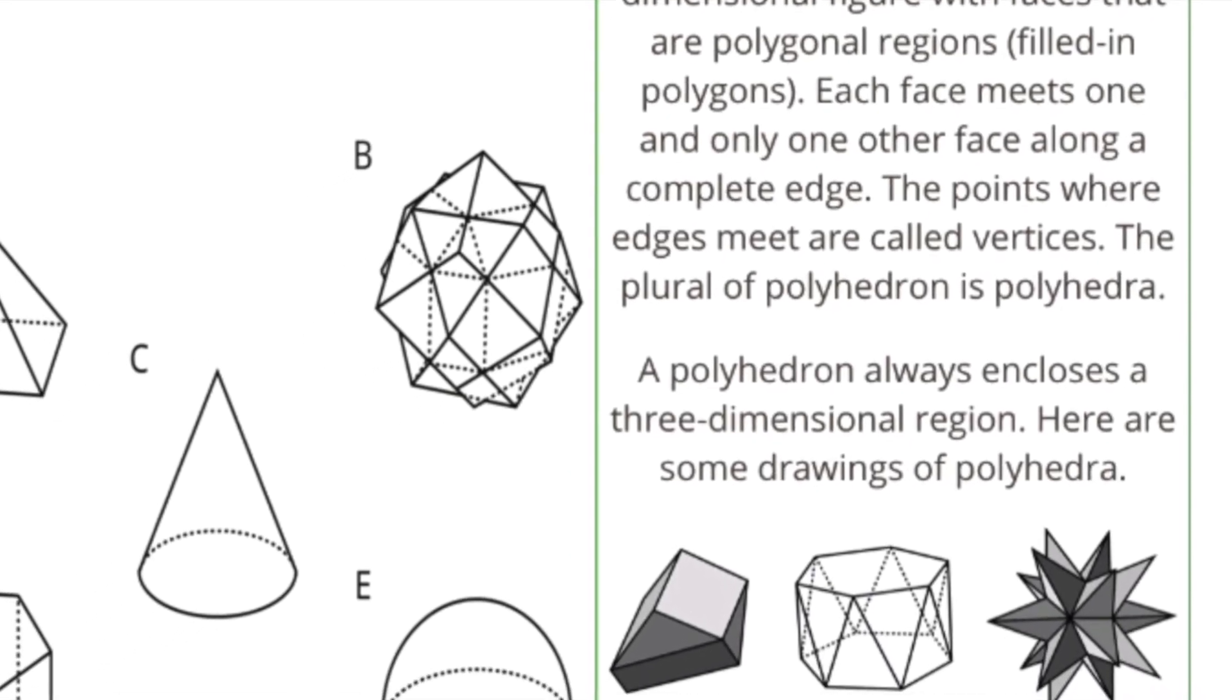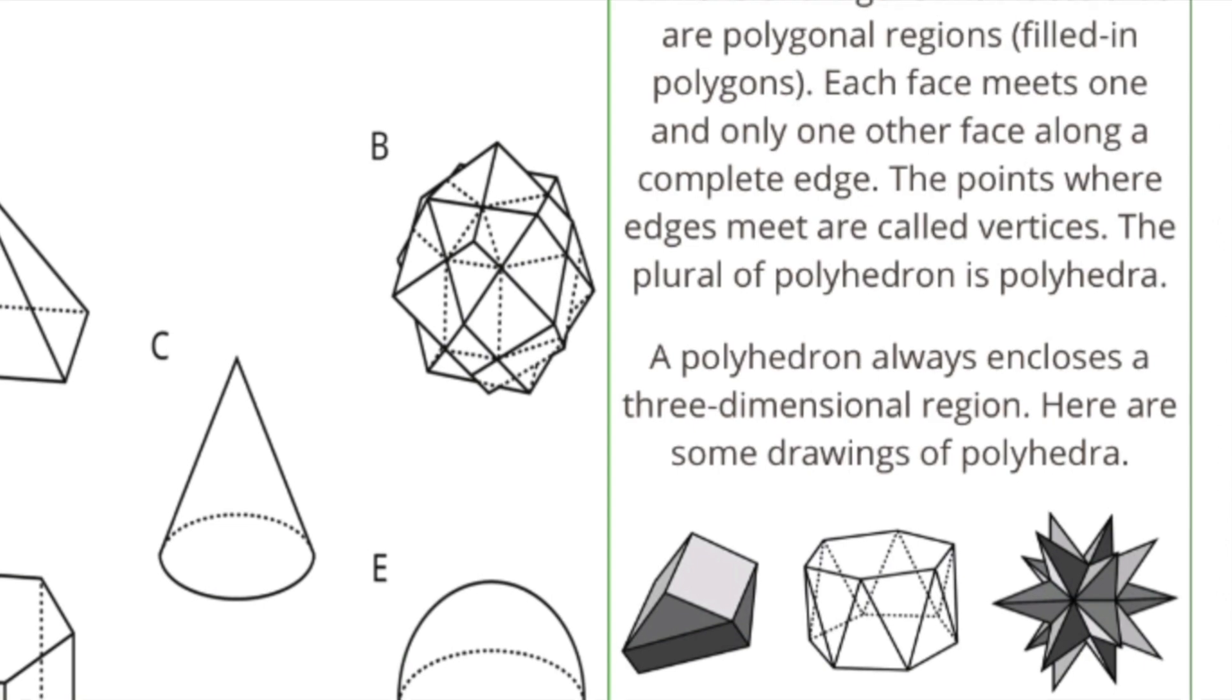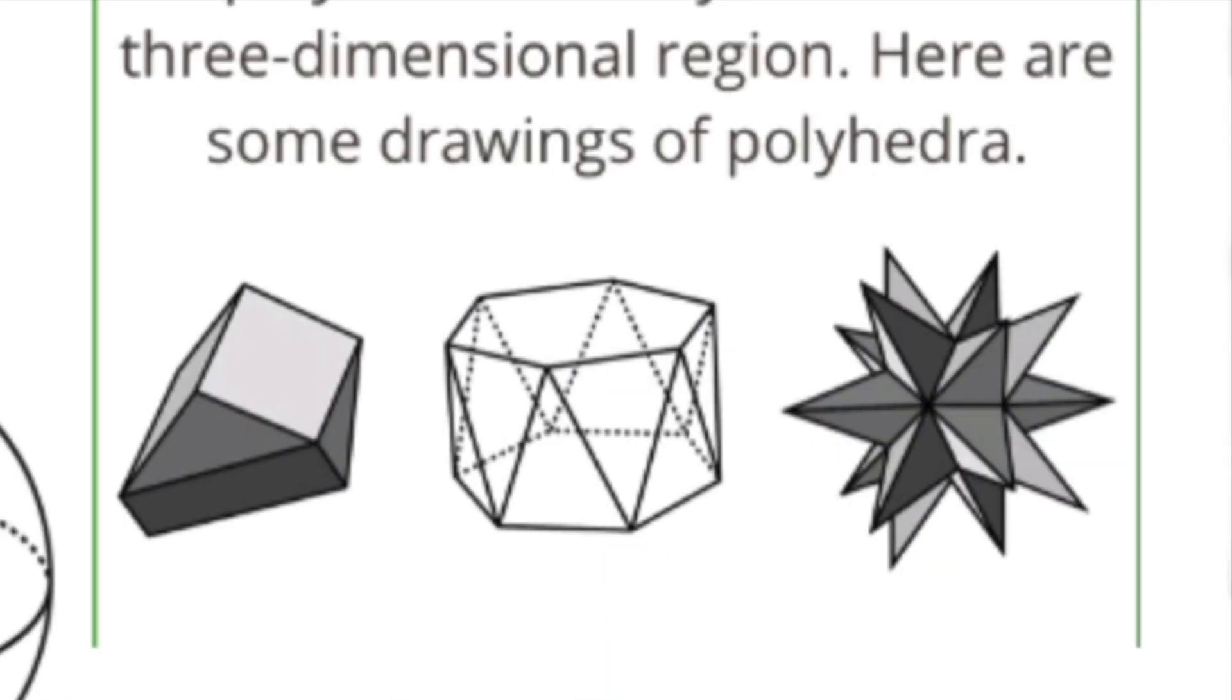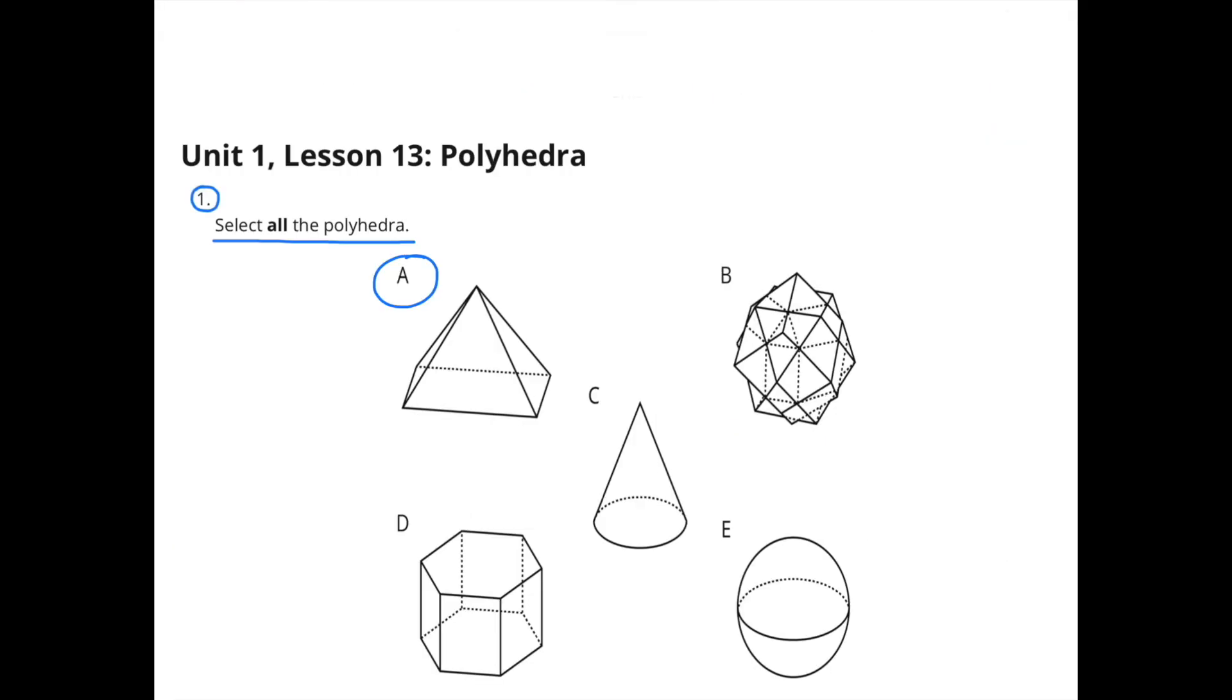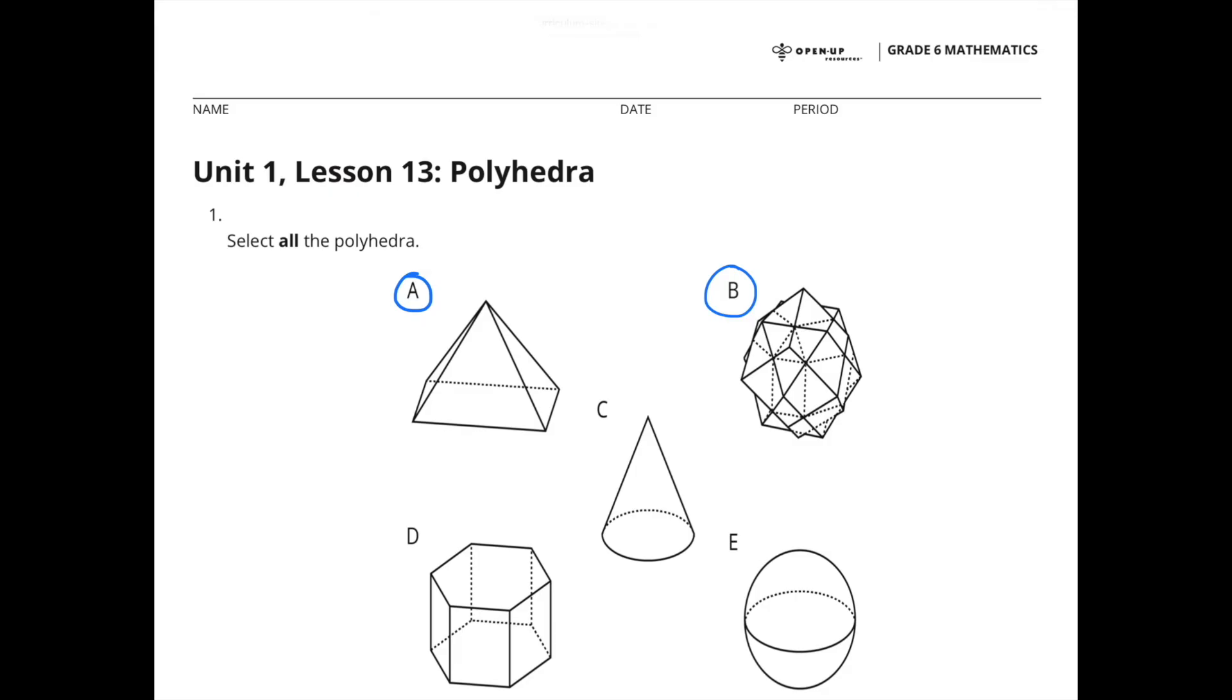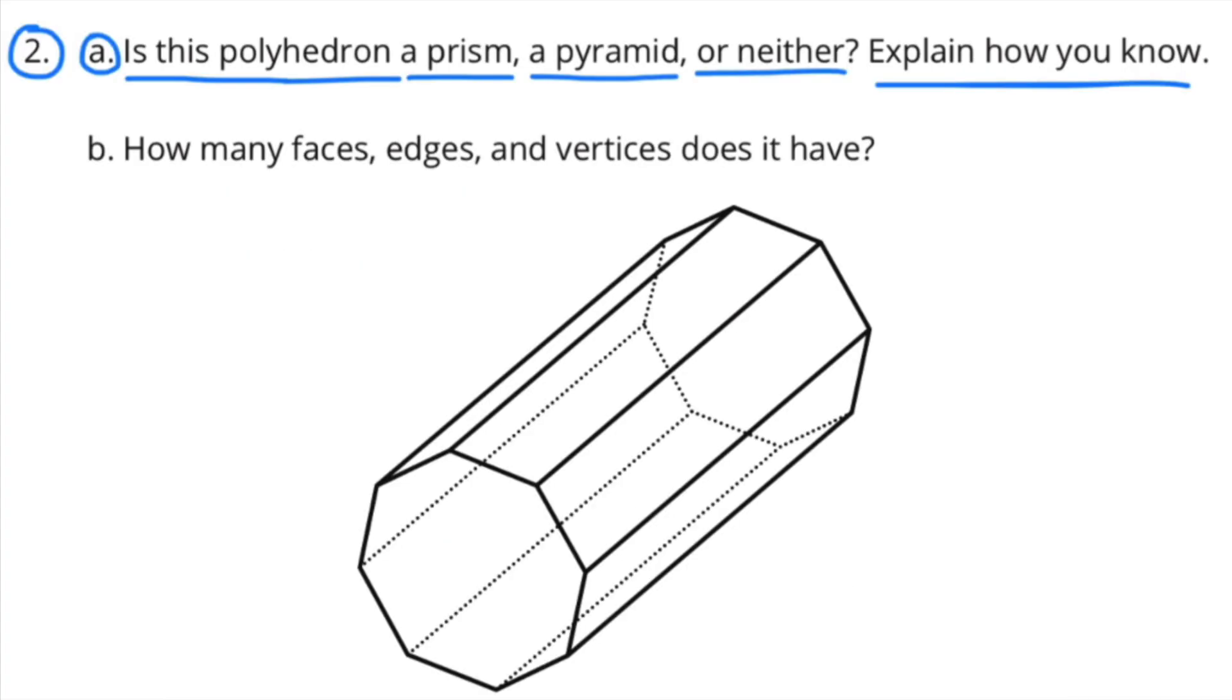Here are three examples of polyhedra: Figure A is a polyhedron, Figure B is a polyhedron, and Figure D is a polyhedron. The other two figures are not polyhedrons. Number 2a: Is this polyhedron a prism, a pyramid, or neither? Explain how you know.